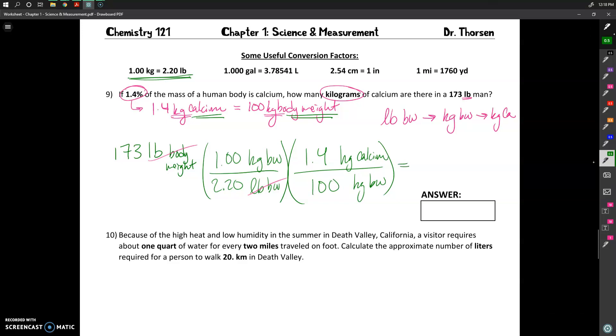And so 173 pounds, I'm going to multiply that by 1. I'm going to divide by 2.2. I'm going to multiply by 1.4. And then I'm going to divide by 100. So 173 divided by 2.2 times 1.4 and divided by 100. And don't forget to do that divided by 100 at the end there, because that is very important. The number we get from this is 1.1009 kilograms of calcium.